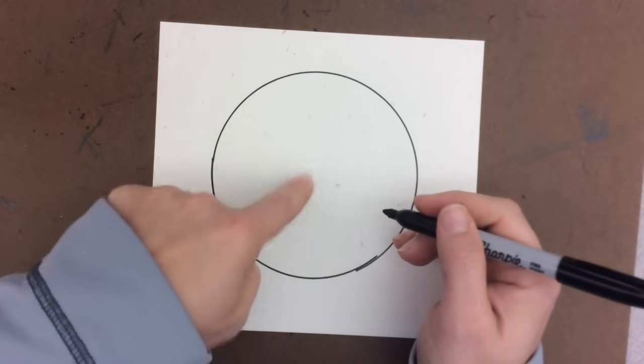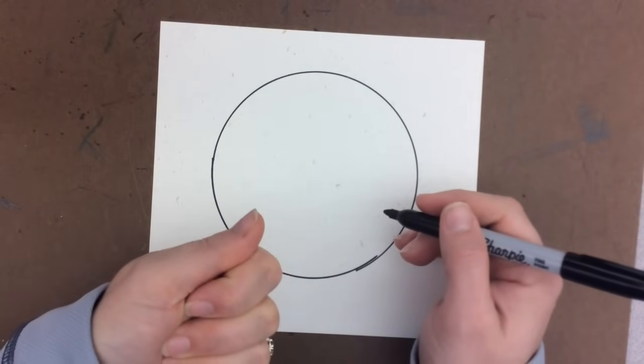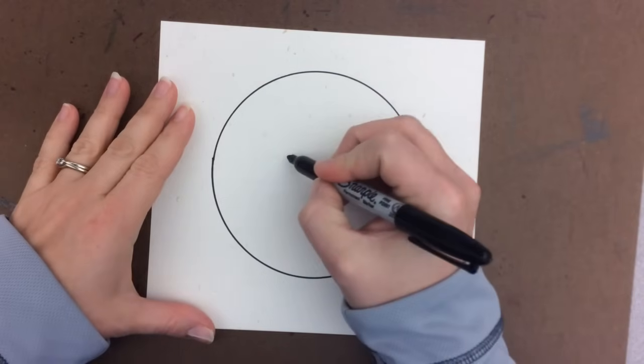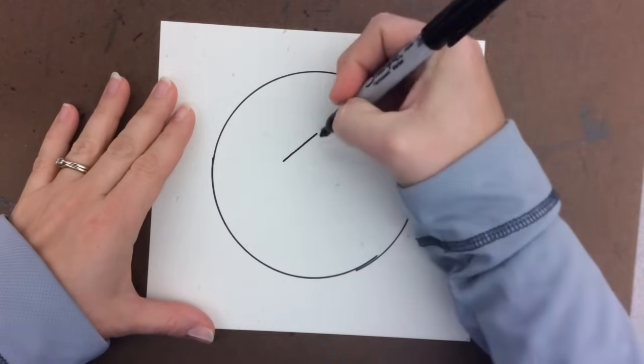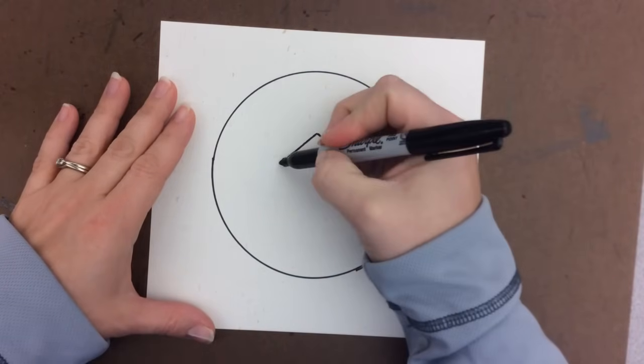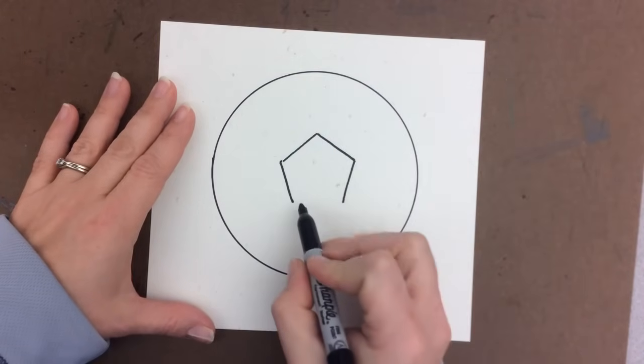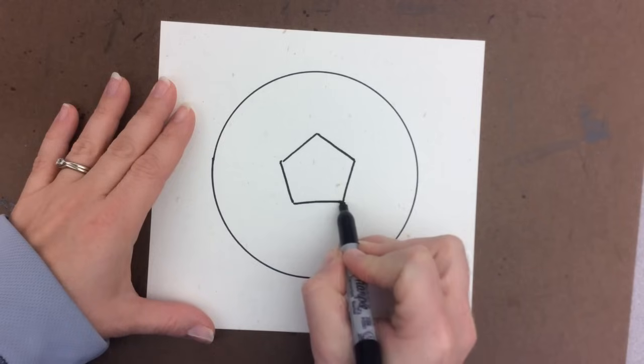We're going to start with a shape that has five sides. Do you know what shape that is? It's a pentagon. We're going to start out by drawing an arrow up, then two diagonal lines in and one line that goes across.